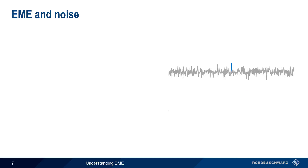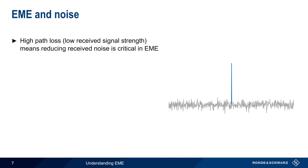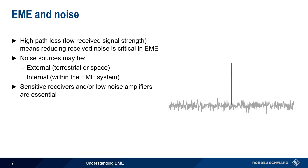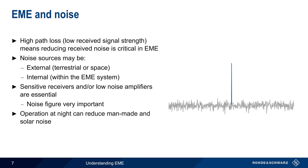The high EME path loss also means that reducing received noise is critically important in EME. Like most other forms of radio communication, noise in EME can be from external sources — in this case either on the Earth or in space — or the noise can be internal, generated from components and devices within the EME system or receiver itself. Since the received signals can be very small, using sensitive receivers and low noise amplifiers is vital, with noise figure often being the most important figure of merit when building an EME system. Time of day can also play a role in reducing noise, and nighttime operation is sometimes preferred since this can reduce the amounts of both man-made and solar noise.